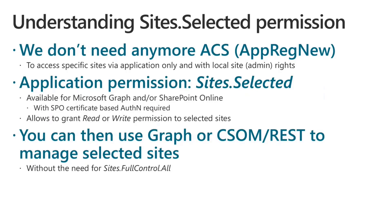This was not the preferred option from a security point of view. Nowadays, we can also use a new flavor of permission called site.selected, which is available both for Microsoft Graph and for SharePoint Online. It is an application permission, and through that permission we can select the site collections where we want to have access, and we can then use either Microsoft Graph and the Microsoft Graph SDK or CSOM and REST and eventually the PnP SDK to access the target site collection.